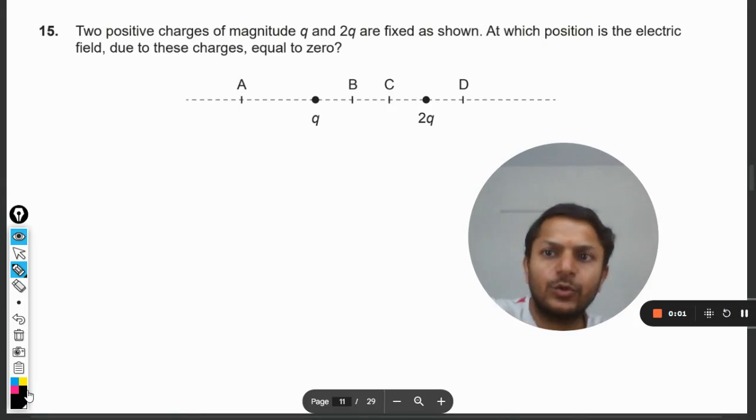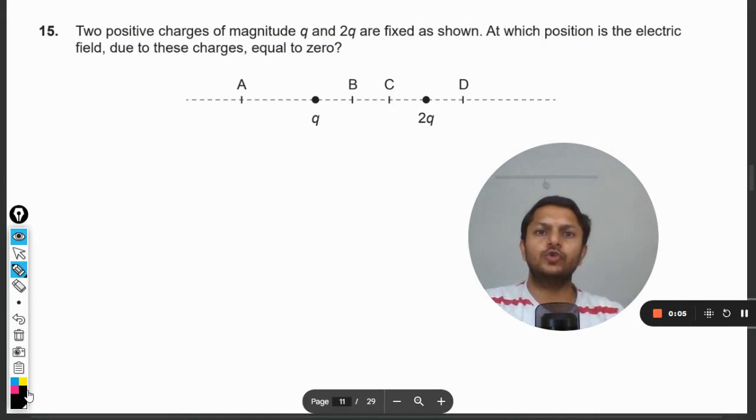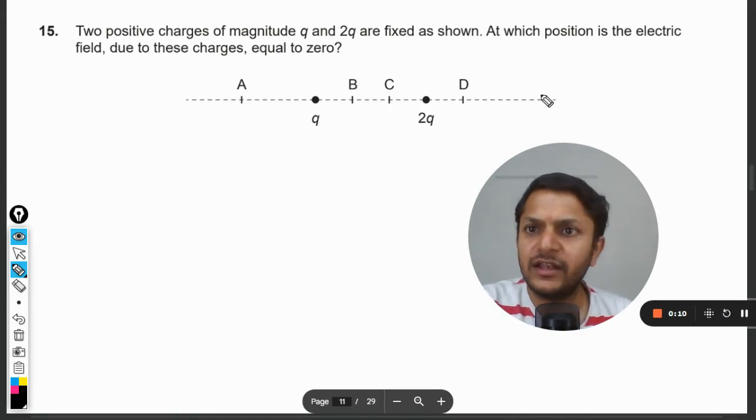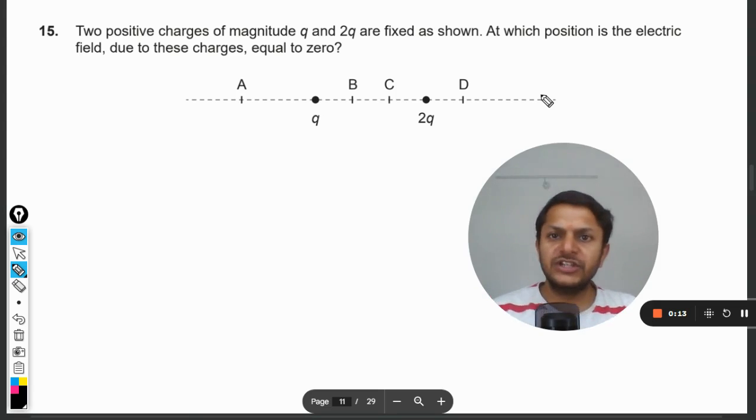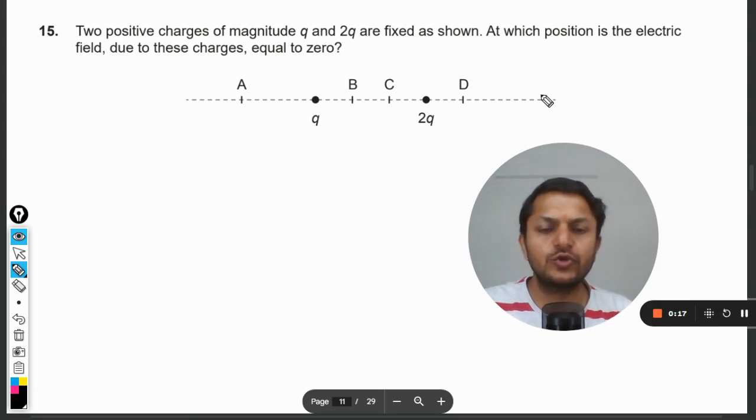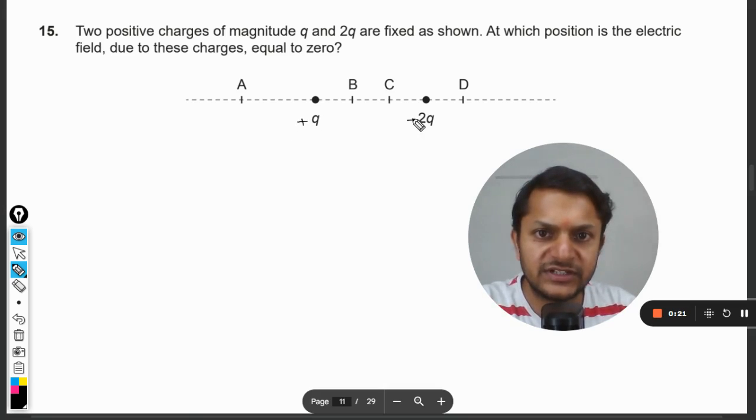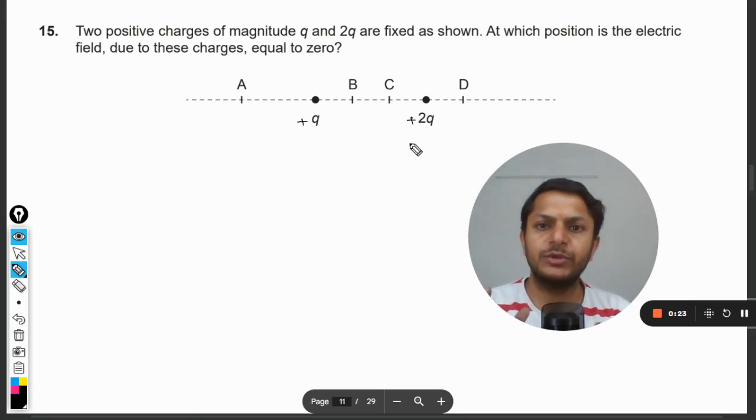Dear students, let us see what is in this question. Two positive charges of magnitude q and 2q are fixed as shown. At which position is the electric field due to these charges equal to zero? So we want to find the distance where the electric field due to these two positive charges will be equal to zero. This charge is positive, this charge is also positive, and we want it to be equal to zero electric field intensity.